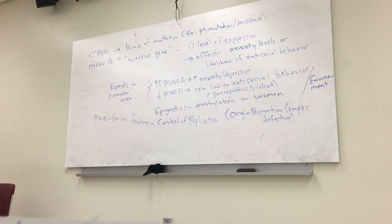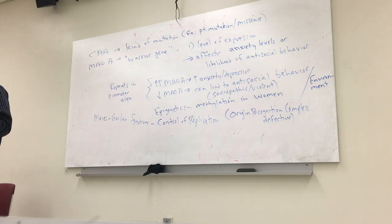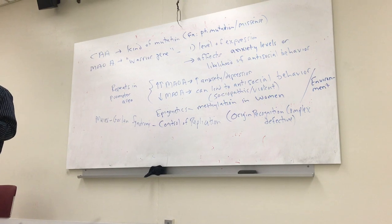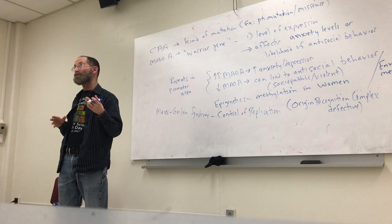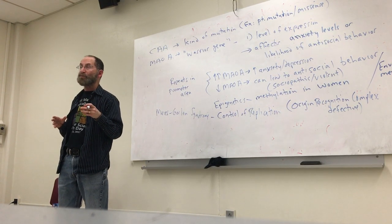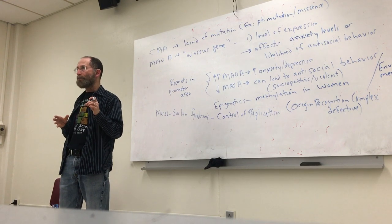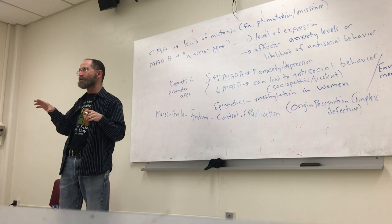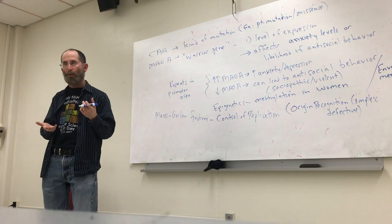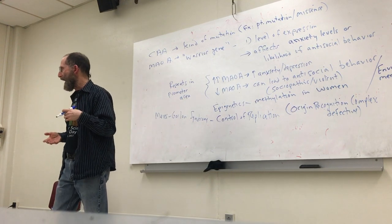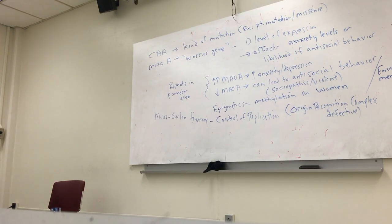The next set of slides has to do with dogs. Those familiar with dogs know there's a great variety in terms of breeds. Dogs, wolves, and other canines are actually all the same species, so all these differences are due to different forms of different genes. The next set of slides deals with the variation in size of dogs — from as small as a Chihuahua to as big as a Great Dane — which has to do with a mutation in the insulin-like growth factor gene.